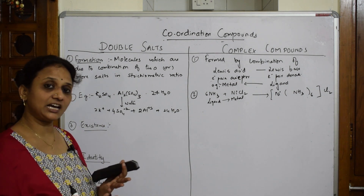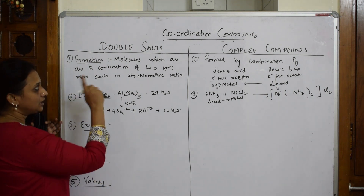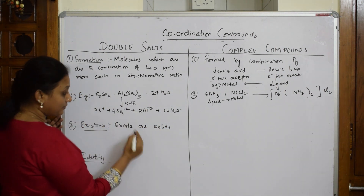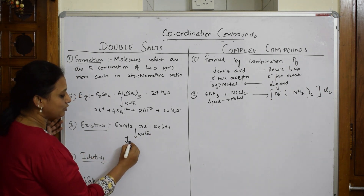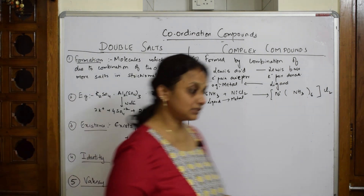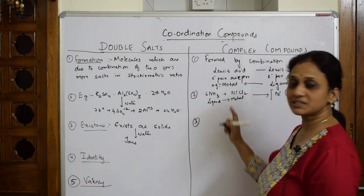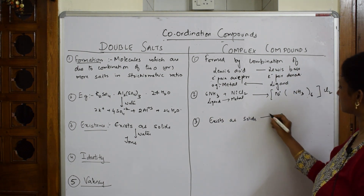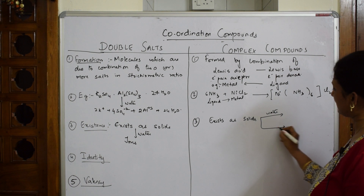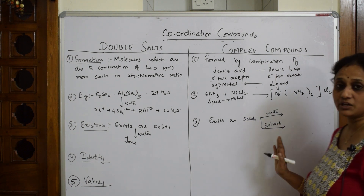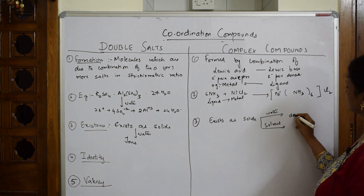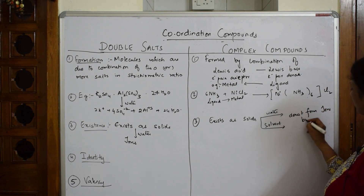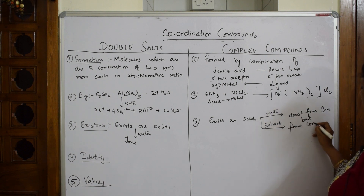Regarding existence: double salts exist as solids, and when dissolved in water they form ions — they dissociate into ions. Complex compounds also exist as solids and can dissolve in water or any other solvent, but they do not form ions. Instead, they form complex ions. This is the first important difference.